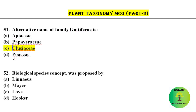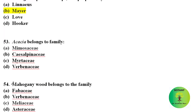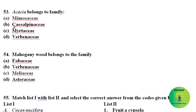The biological species concept was proposed by Mayr. Acacia belongs to family Mimosaceae. Mahogany wood belongs to family Meliaceae.